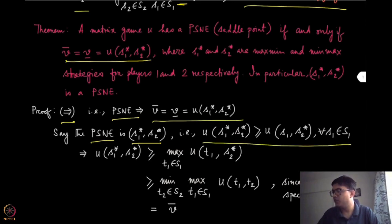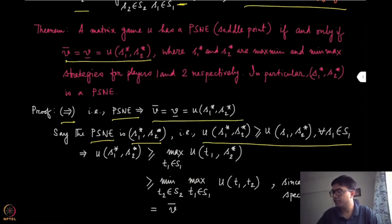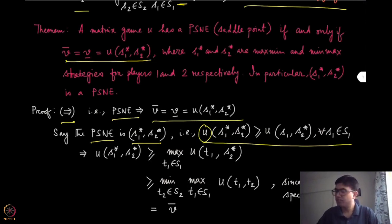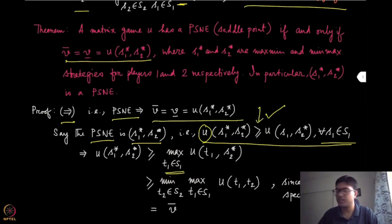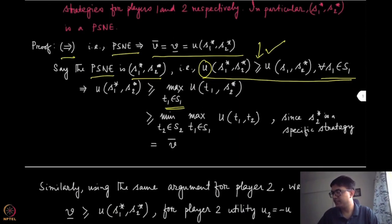By the definition of PSNE, we know that the inequality holds for player 1, and a similar inequality holds for player 2 — with the inequality flipped because we are looking at utility u. Starting from that inequality, since it holds for all S1 in capital S1, we can write it even for the maximum value; in fact it will be an equality, but we use just the inequality and take the maxima.